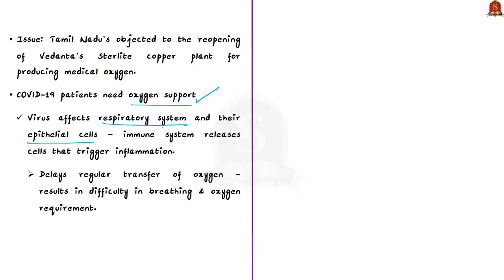Why do COVID-19 patients need oxygen support? The coronavirus affects the patient's respiratory system and their epithelial cells — cells that come from the surfaces of our body such as skin, blood vessels, urinary tract, and organs, serving as a barrier between inside and outside of our body to protect us from viruses. The virus affects these epithelial cells, and to fight the infection the body's immune system releases cells that trigger inflammation. This continued inflammatory immune response delays the regular transfer of oxygen in the lungs, causing difficulty in breathing and oxygen requirement.